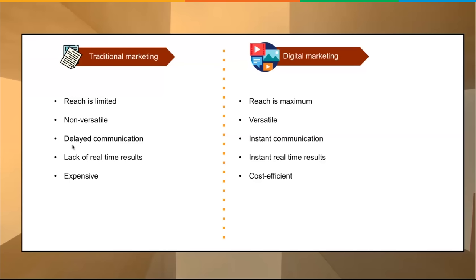Traditional marketing can be very costly. For example, if you're printing and mailing postcards, there are postage fees. With digital marketing, it's very cost-efficient. You can pick and choose who you want to target, when, where, and what. If you're doing search, you can put your bidding and hours in place to control how much you spend. That control is one of the biggest advantages of digital marketing — not only do you get real-time results, but you can control costs and optimize based on those results.